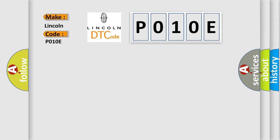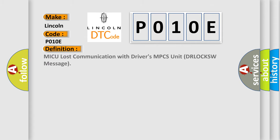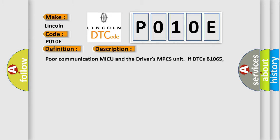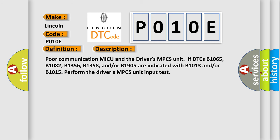The basic definition is: MICU lost communication with driver's MPCS unit — DRLOCKSW message. This is a short description of this DTC code. Poor communication between the MICU and the driver's MPCS unit. If DTCs B1065, B1082, B1356, B1358, and/or B1905 are indicated with B1013 and/or B1015, perform the driver's MPCS unit input test.